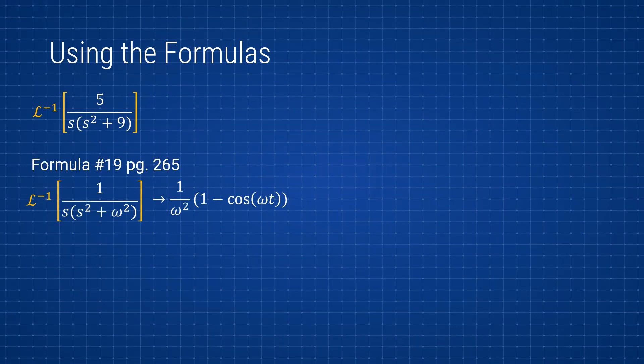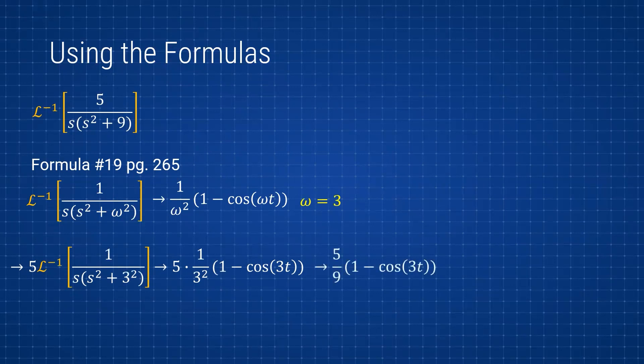Doing that we can see that ω for this one is just 3. Factor out the 5, take the Laplace inverse of that, and then at the end whatever you got we multiply. So we have 5 times 1 over 3² times (1 - cos(3t)), which simplifies to 5/9(1 - cos(3t)).